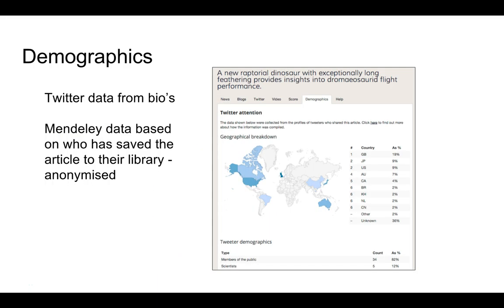We can also look at the demographics in altmetric.com. We can drill down and see the percentage of tweets, blogs and videos — Twitter being the prominent form of communication for researchers on the social web. For this particular article, 9% of all tweets came from Japan and 9% came from the US. This has potential implications in terms of finding out where your research has been communicated, why perhaps this is happening in another country, whether there is particular interest in that country, and whether there is potential for collaborations.